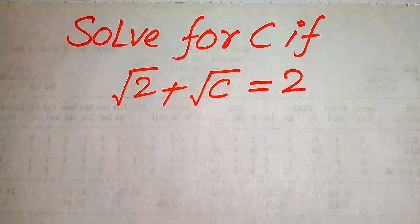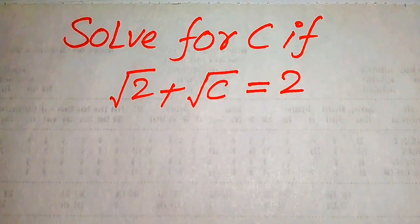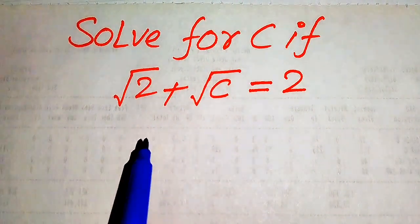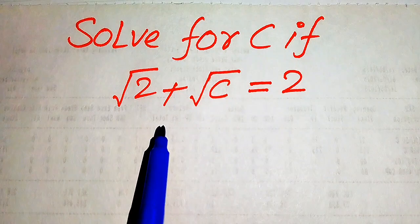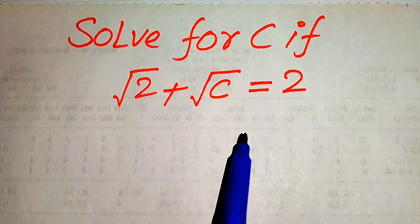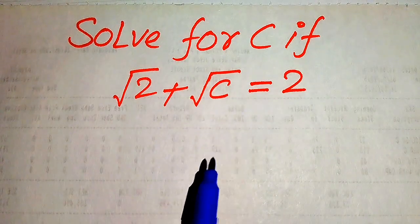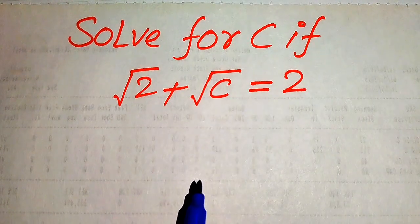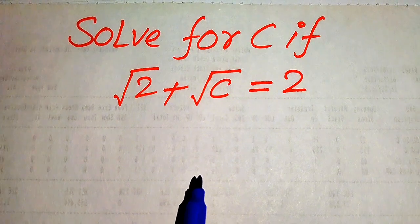Hello everyone, welcome. We have a nice algebra problem to solve. Here we have square root of 2 plus square root of C equals 2, and we solve this problem for the values of C.